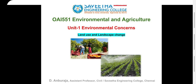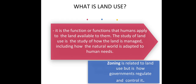We are going to discuss about land use and landscape change in environmental and agriculture, subject unit 1: environmental concern. Land use is the function that humans apply to the land available to them. The study of land use is the study of how the land is managed, including how the natural world is adapted to human needs.